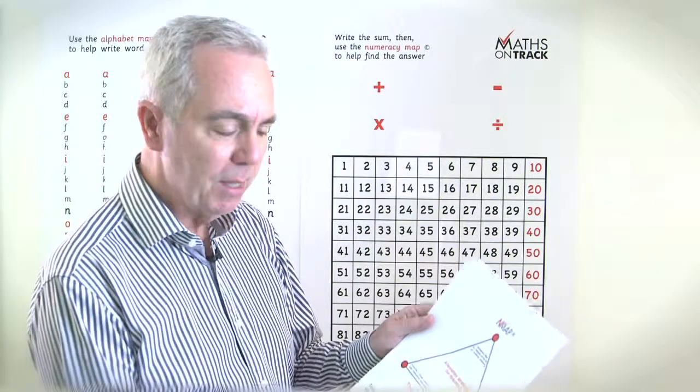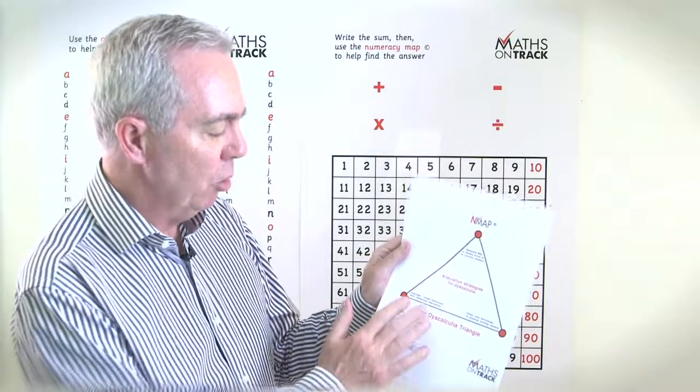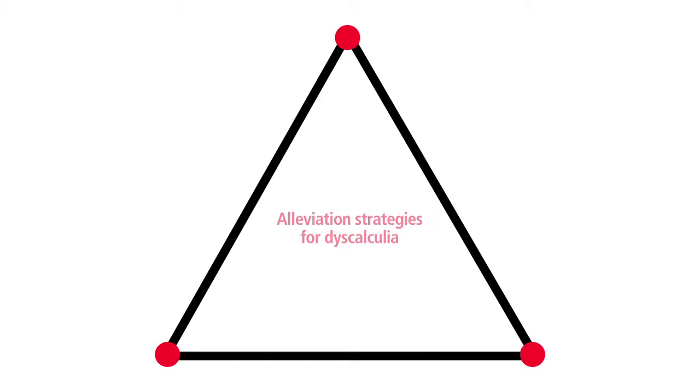I now refer to these as the dyscalculia triangle and the three main strategies were using visual concrete materials as opposed to abstract approaches, especially if there's interaction and discussion.